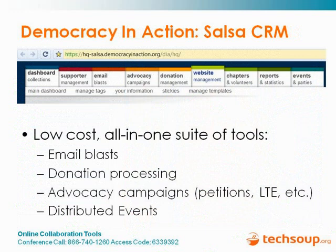The next tool is Democracy in Action, a company that provides the Salsa platform. For cash-strapped nonprofits looking for an all-in-one constituent relationship manager, Salsa is a godsend. In one package, Salsa provides the ability to email your supporters, process donations, launch advocacy campaigns like petitions and letters to the editor, and organize distributed or single local events. There are other competing tool sets like BlueState Digital and Convio, but in my opinion Salsa remains the cheapest and easiest way to have a lot of what you do organized under one roof.